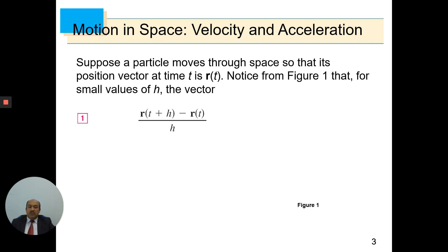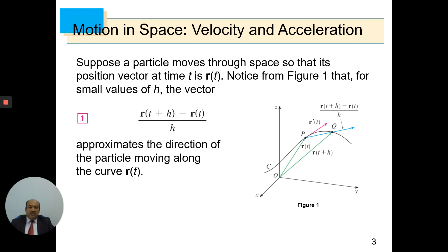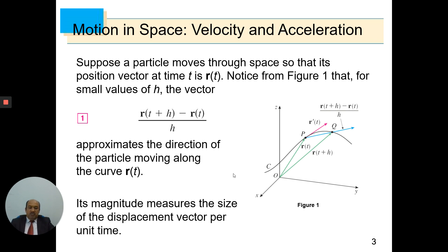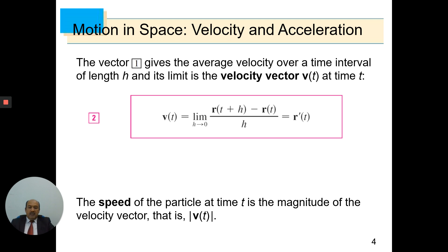Suppose a particle moves through space so that its position vector at time t is r(t). If you look at figure one, you can see that for small values of h, a vector approximates the direction of the particle moving along the curve r(t). Its magnitude measures the size of the displacement vector per unit time. This vector gives the average velocity over a time interval of length h, and its limit is the velocity vector v(t) at time t, defined by the following formula.